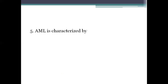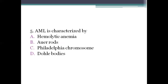Next question: AML is characterized by? Option A: hemolytic anemia. Option B: Auer rods. Option C: Philadelphia chromosome. Option D: Döhle bodies. The right answer is option B, Auer rods. Auer rods, or Auer bodies, are large, crystalline, cytoplasmic inclusion bodies. They are observed in myeloid blast cells in cases of AML (acute myeloid leukemia) and also in acute promyelocytic leukemia and myeloproliferative disorders. These Auer rods are composed of fused lysosomes and are rich in lysosomal enzymes.